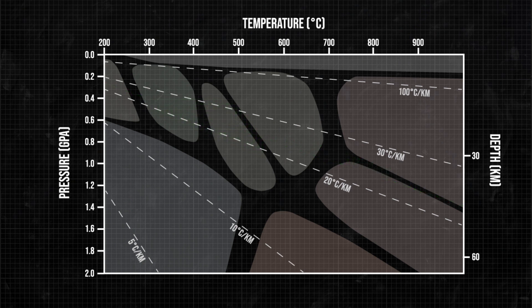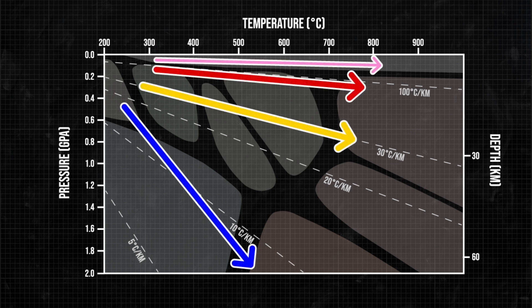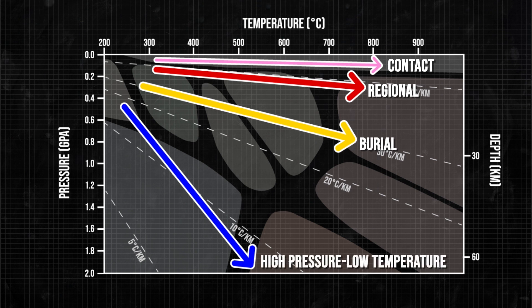It is geothermal gradients that allow us to link metamorphic rocks to plate tectonics. Look at the four colored arrows, which distinguish the four great kinds of metamorphism in order of decreasing thermal gradient. Contact, regional, burial, and high-pressure low-temperature metamorphism.